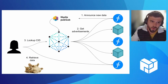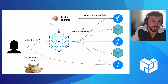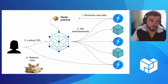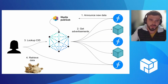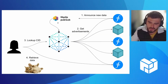Whenever IPNI picks up an announcement, it reaches out directly to that node — the storage provider — and fetches all the recent updates. The unit of update is called an advertisement, which is a structure that contains a list of content identifiers. By announcing advertisements, you tell IPNI that you have these CIDs available at your node, and IPNI fetches and indexes them.